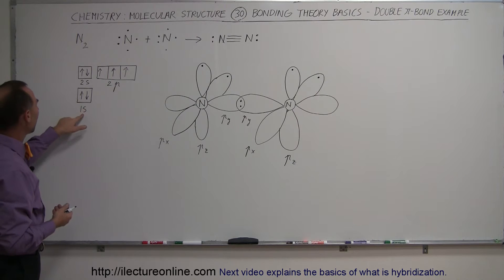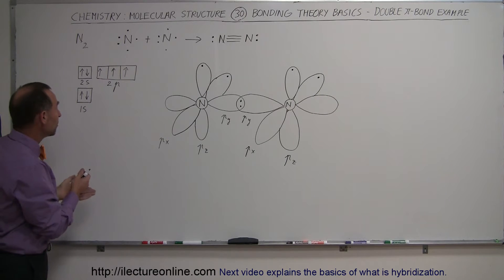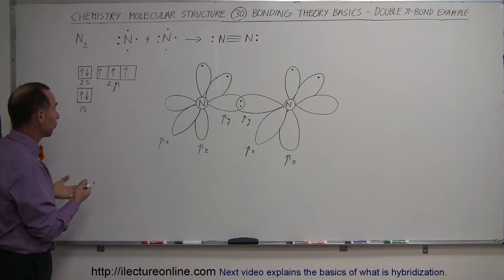Nitrogen has two electrons in the 1s orbital, two electrons in the 2s orbital, but only three electrons in the 2p orbitals, which means there's only one electron in each. This means nitrogen is very likely to form as many as three bonds. So how does that work?